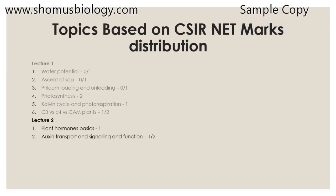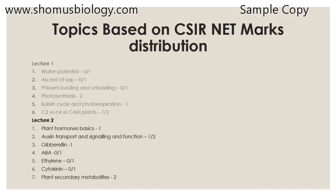We'll talk about five important plant hormones in detail, including auxin, auxin transport and signaling and function, gibberellin, abscisic acid, ethylene, and cytokinin. We'll also talk about plant secondary metabolites which do not have a direct role in plant growth, and we'll see the difference between plant hormones and plant secondary metabolites, covering different classes and their functions with proper examples. The numbers written after every subtopic denote the approximate number of questions you'll get from those subtopics in CSIR NET exam.